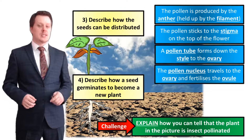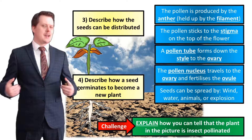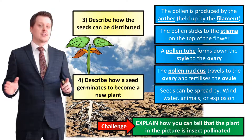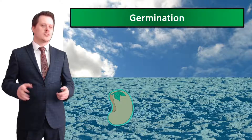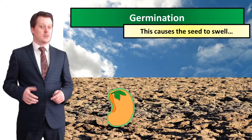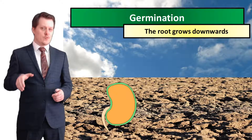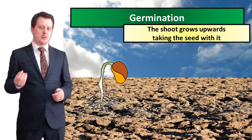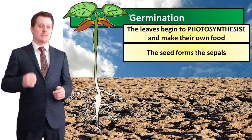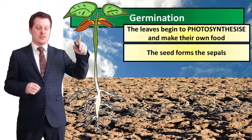The ovule then becomes our seed, and the ovary will potentially become our fruit. Seeds can be spread by wind, water, animals both internal and external, or explosions. For part four, how does the seed germinate to become a new plant: germination starts with our seed absorbing water from the soil, which causes the seed to swell. That swelling causes the seed coat to open, the root then grows down into the soil which pushes the shoot upwards, and the leaves begin to sprout from the seed and start to photosynthesize and make their own glucose.